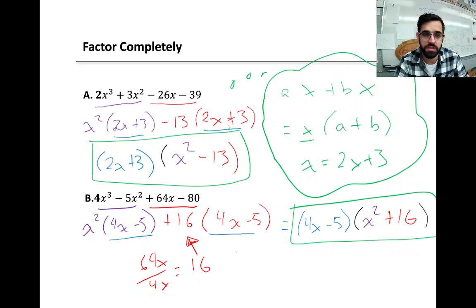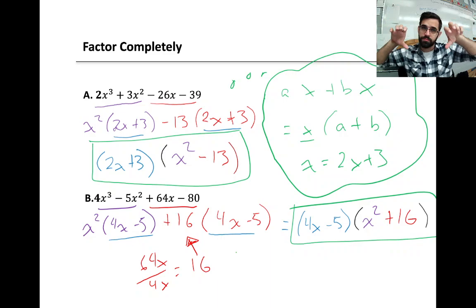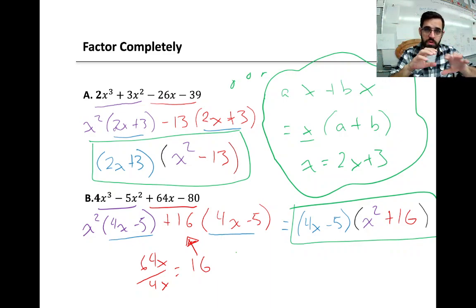The second pair, we can pull a negative 13 out of, leaving 2x plus 3. Notice, 2x plus 3, if we think of this as two factors minus two factors, they both have a factor of 2x plus 3. We can do greatest common factor, so the greatest common factor between those two terms is 2x plus 3. We'll pull that out, leaving the x-squared minus 13 behind. 2x plus 3 comes out front, just like greatest common factor. Leaving us with this setup right here.